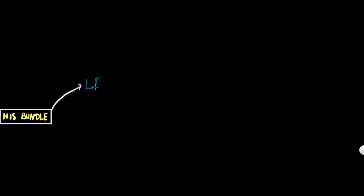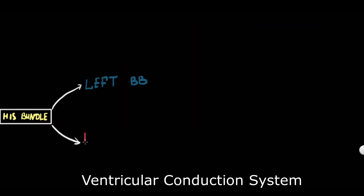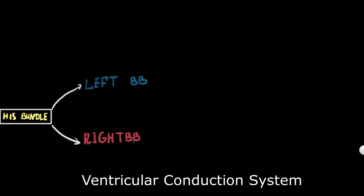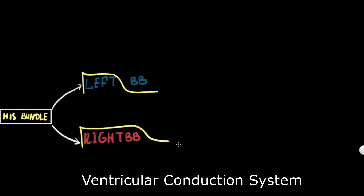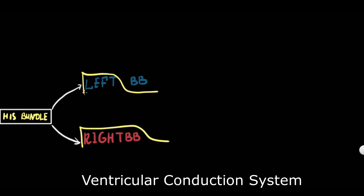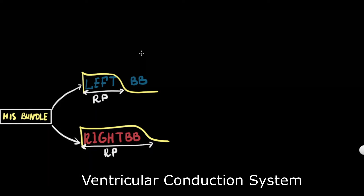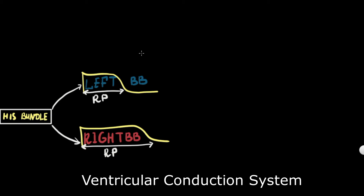The ventricular conduction system branches from the His bundle to form the left bundle branch and right bundle branch. The refractory periods of the right and left bundle branches are not equal — the right bundle branch has a longer action potential and refractory period. This is a key mechanism that causes ventricular aberrancy.